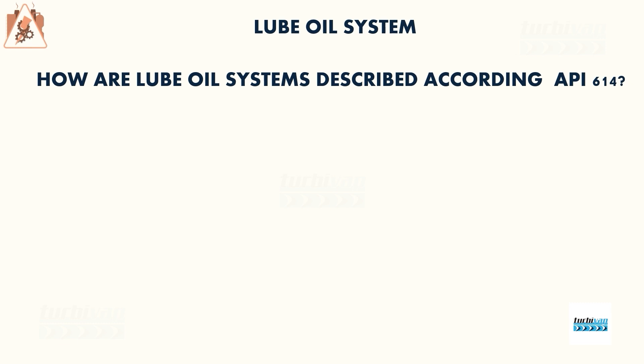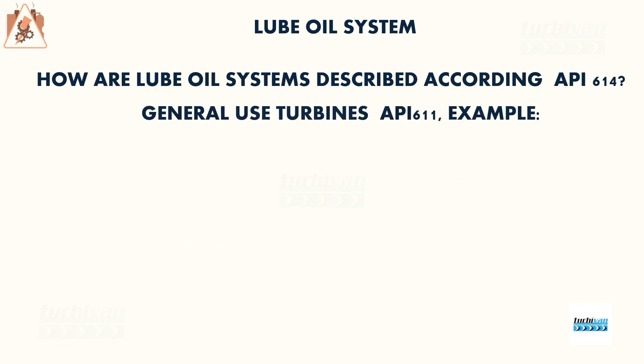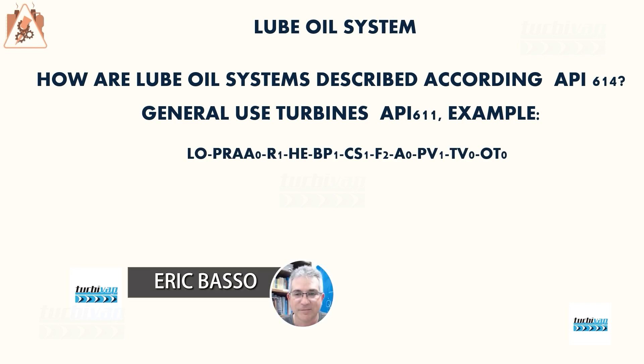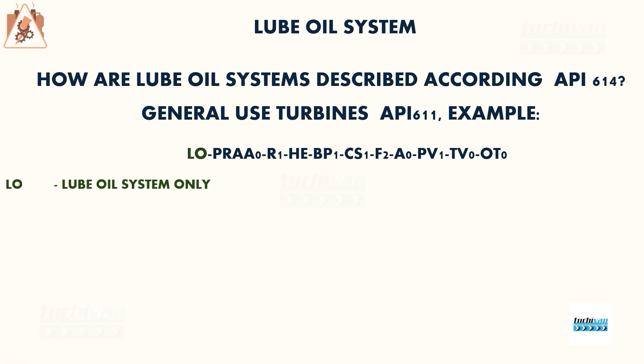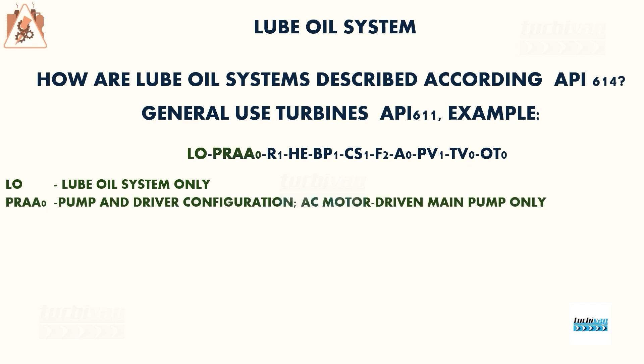How does API 614 describe lubrication systems for general purpose turbines? As a quick example, there is a code string describing how it should be built. For an API 611 turbine, 'LOS' stands for Lube Oil System Only — one common lubrication system. 'PRAA-0' describes the pump and motor configuration: a single pump with AC motor only.